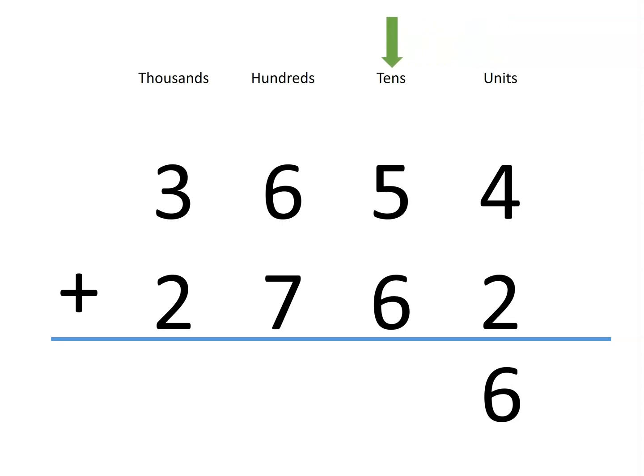Since the sum of 5 and 6 is 11, we have 11 tens. But the best way to regroup that is by keeping 1 in the tens and carrying the 10 tens into 100.